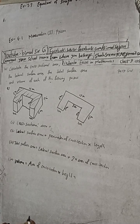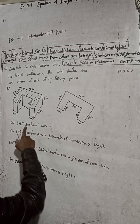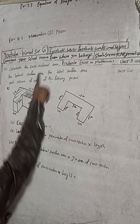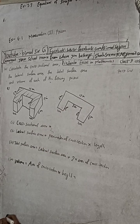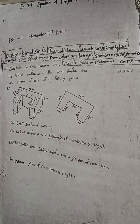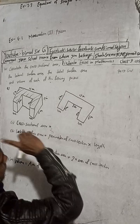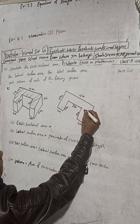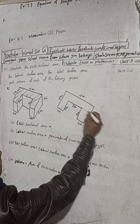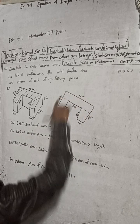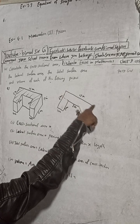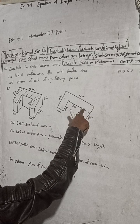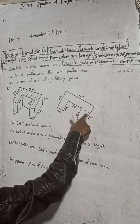Now we have all dimensions and can find the cross-sectional area. I will divide the shape into rectangles by cutting here and here. The cross-sectional area consists of a bigger rectangle with length 15 and width. The total width is 6, and 6 minus 3 equals 3.